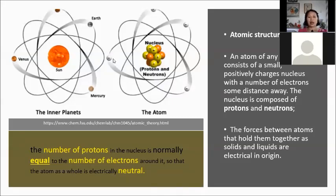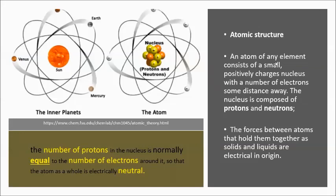Take note that when an atom is neutral, the number of protons must be equal to the number of electrons, meaning there is no excess positive or negative charge. An atom of any element consists of a small positively charged nucleus with electrons at some distance away. The nucleus is composed of neutrons and protons, and the forces that hold atoms together in a solid or liquid are electrical in origin.